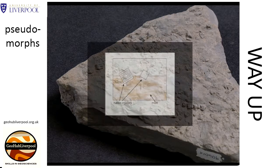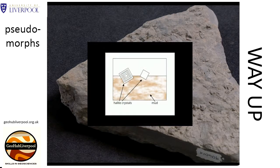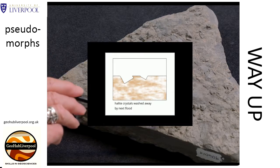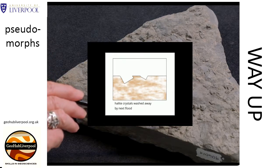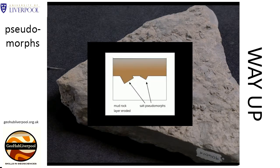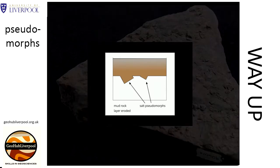These diagrams show the steps leading to the formation of the pseudomorphs. Here, the salt crystals that formed on the surface of the mud are shown. The halite crystals have been dissolved, but moulds of their shapes are left behind. A later layer of sediment is deposited on top, and casts of the halite crystals are formed at the base of the bed. If the mud layer is removed by erosion, the salt pseudomorphs are preserved at the base of the younger rock layer.